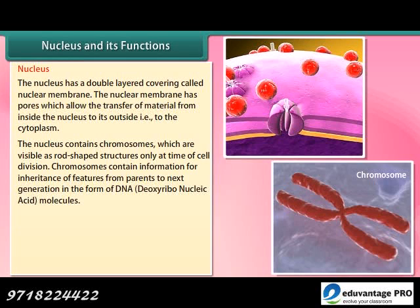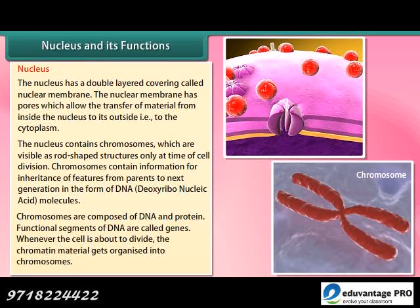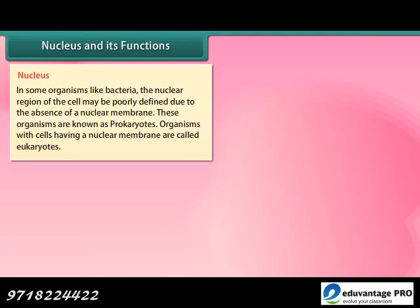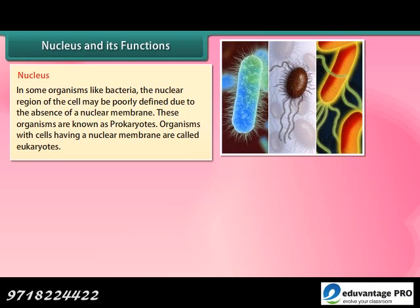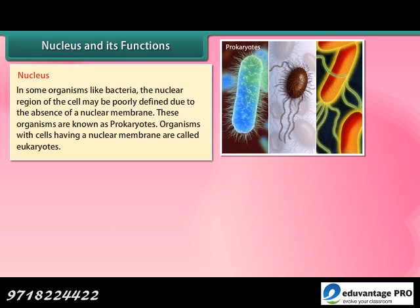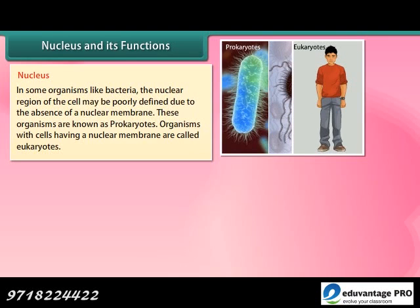Chromosomes are composed of DNA and protein. Functional segments of DNA are called genes. Whenever the cell is about to divide, the chromatin material gets organized into chromosomes. In some organisms like bacteria, the nuclear region of the cell may be poorly defined due to the absence of a nuclear membrane; these organisms are known as prokaryotes. Organisms with cells having a nuclear membrane are called eukaryotes.